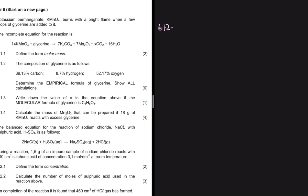The composition is 39.13% carbon, 8.7% hydrogen, and 52.17% oxygen. The question asks us to determine the empirical formula of glycerine and show all calculations. These percentages tell us that if we had 100 grams of glycerine, 39.13g would be carbon, 8.7g would be hydrogen, and 52.17g would be oxygen. It's easier to work with 100, so let's assume we have 100 grams of glycerine.